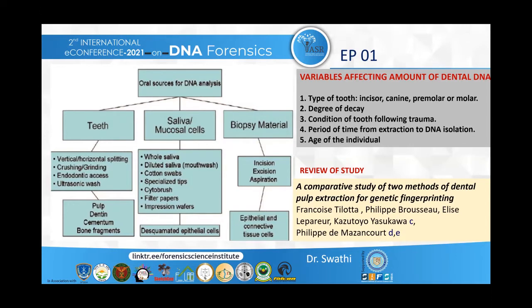Other variables include the degree of decay, which is the condition of teeth prior to extraction, the degree of tooth damage following trauma — such as degree of fracture and loss of tooth structure — the period of time from extraction to DNA isolation, and the age of the individual. The study I'll be focusing on today is a comparative study of two methods of dental pulp extraction: the crushing and grinding method and the endodontic access method for DNA fingerprinting, by Francoise Tilota and others.